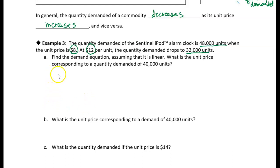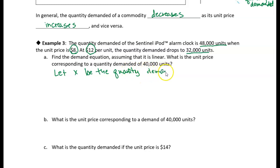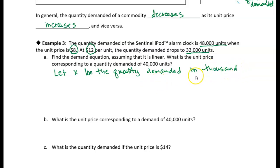First, let's define our x variable. Let x be the quantity demanded. It'll be a little easier to work with since these are kind of big numbers. So let's define x in thousands. So the quantity demanded of 48,000 units becomes 48, and the 3,200 units becomes 32. Working with smaller numbers is a little easier.